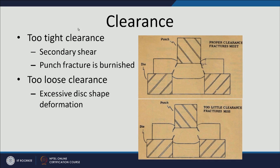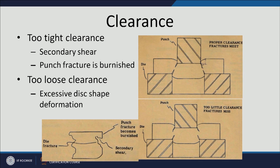When the clearance is too tight, it leads to secondary shear where cracks grow from both sides but do not meet at the center, resulting in very rough and ragged surfaces. When the clearance is too loose — meaning the gap is too wide and not optimum — it leads to more disc-shaped deformation, which is also not the desired result.